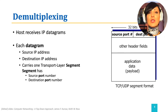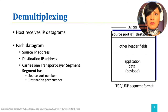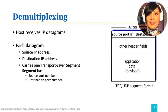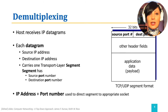This is similar to sending a packet to a unit in a high-rise building. A building is similar to the host, so the IP address is similar to the building address. A process is similar to a unit, and the socket is similar to the unit door. So the port number is like providing the unit door address in that building. Using the combination of IP address and port number, the segment is directed to the appropriate socket and the appropriate process.